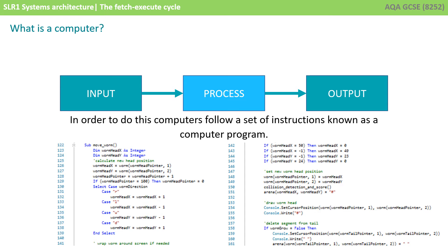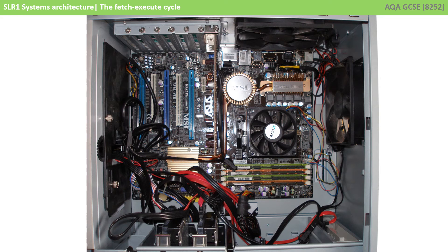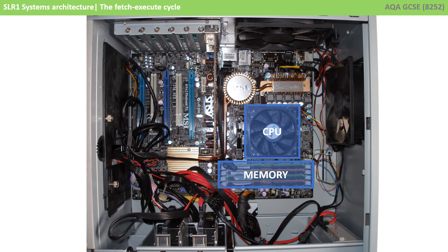To process data, a computer follows a set of instructions known as a computer program. If we take the lid off a typical desktop computer, we can identify two critical components: the memory, which stores the program, and the central processing unit or processor, which is under this large fan and carries out the instructions.